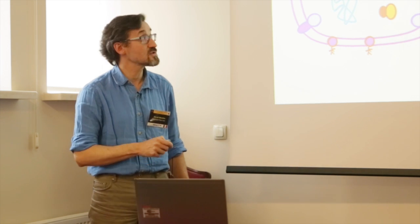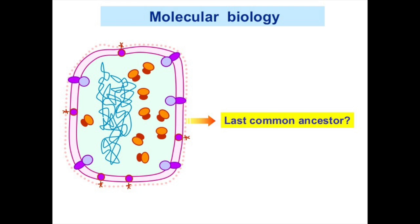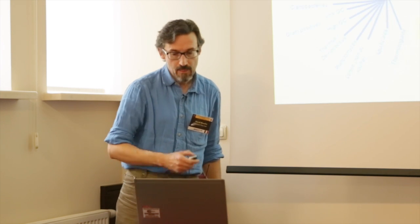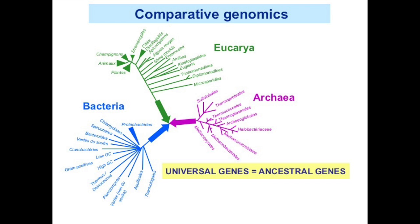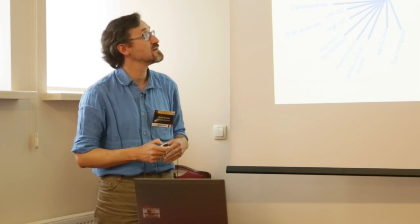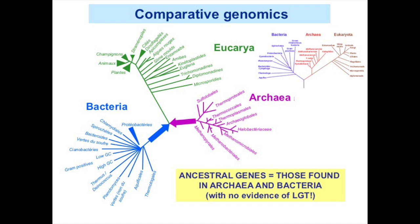It is tempting to speculate that all these characteristics were inherited from the last universal common ancestor. One way to test this is comparative genomics: by studying genome sequences from species of the three domains of life and looking for genes shared by all three, we can infer these genes were present in LUCA. Especially if genes are shared by bacteria and archaea with no evidence of lateral gene transfer between the two domains, we can conclude they were likely ancestral.